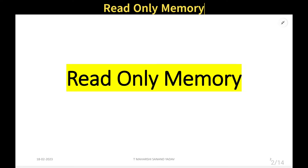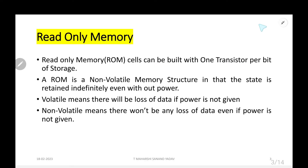Let us try to understand what is meant by read-only memory, and later we shall try to implement a 4x4 NOR-based ROM array. Read-only memory cells can be built with one transistor per bit of storage, meaning if you want to store a single bit of information you need to make use of only one transistor.